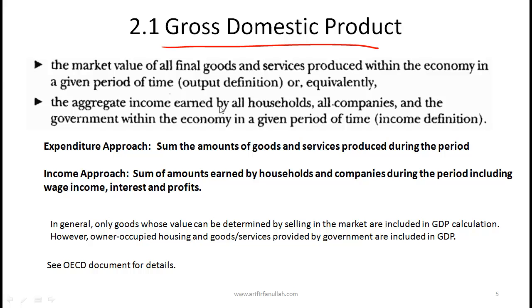There are two ways of looking at GDP, and they should both give the same answer. One way is that GDP is the market value of all final goods and services produced within the economy in a given period of time. This is called the output definition — the definition in terms of how much a country is producing. This is the definition you probably hear more often.